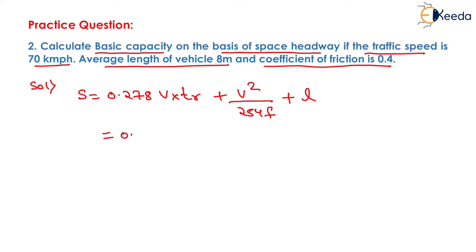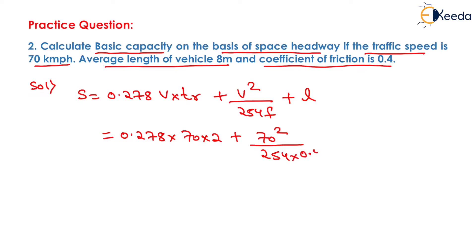We have the speed of vehicle equals 70 km per hour and reaction time is 2 seconds. Substituting: 0.278 × 70 × 2 plus 70² upon 254 × 0.4, plus the vehicle length of 8 meters. Solving this, we get S equals 95.14 meters.